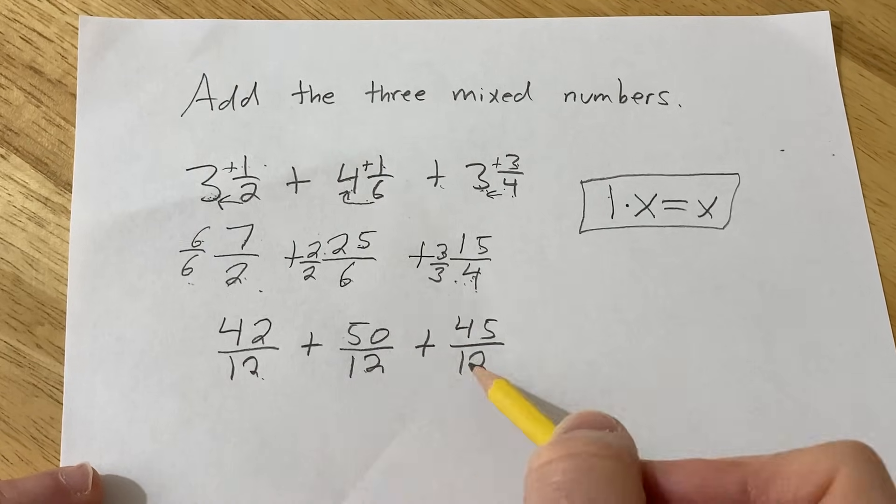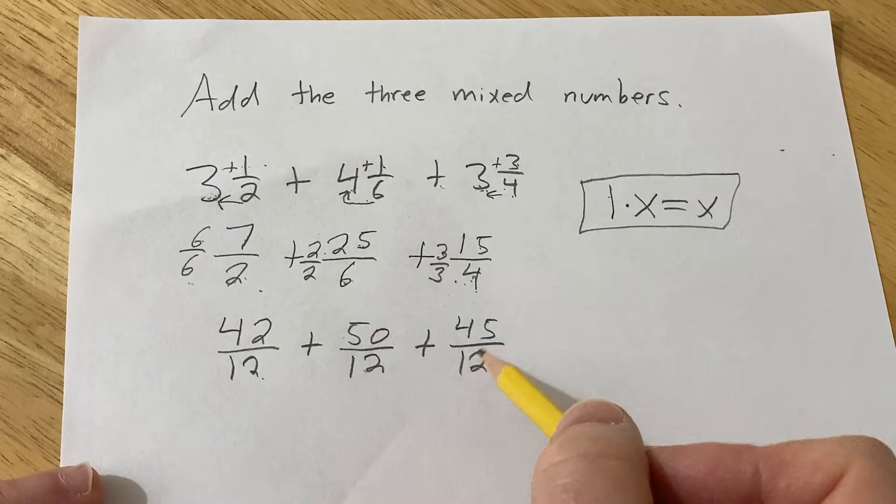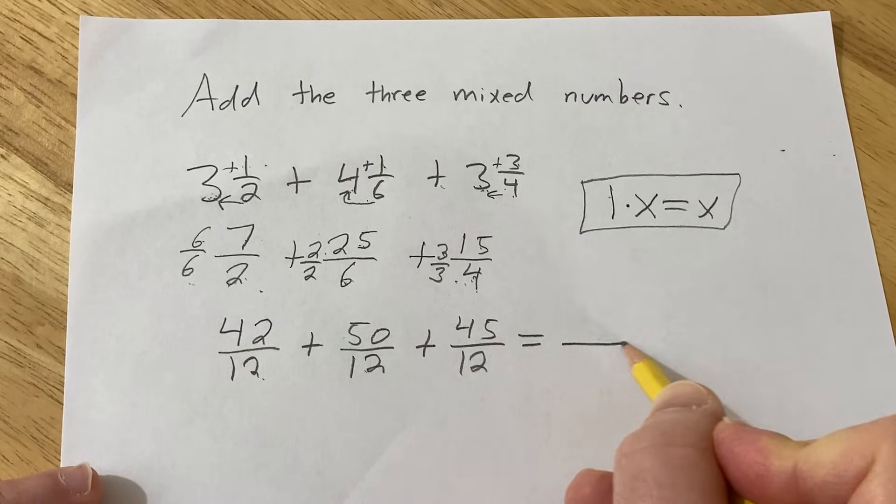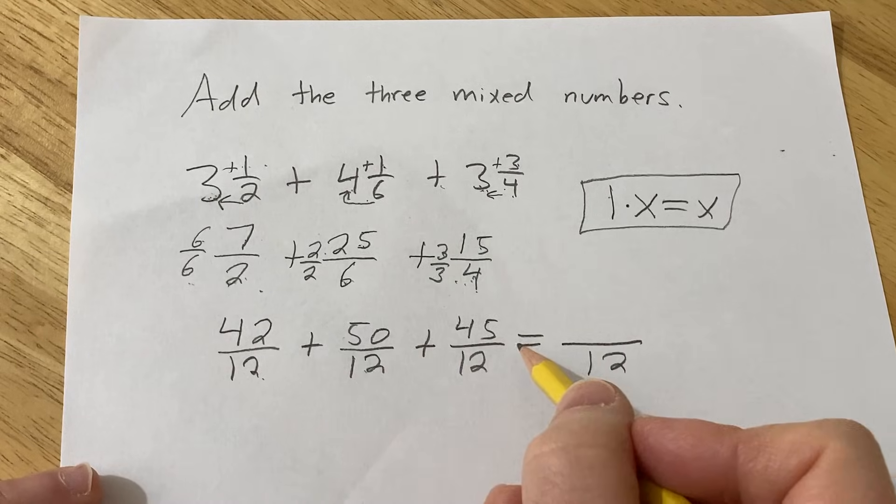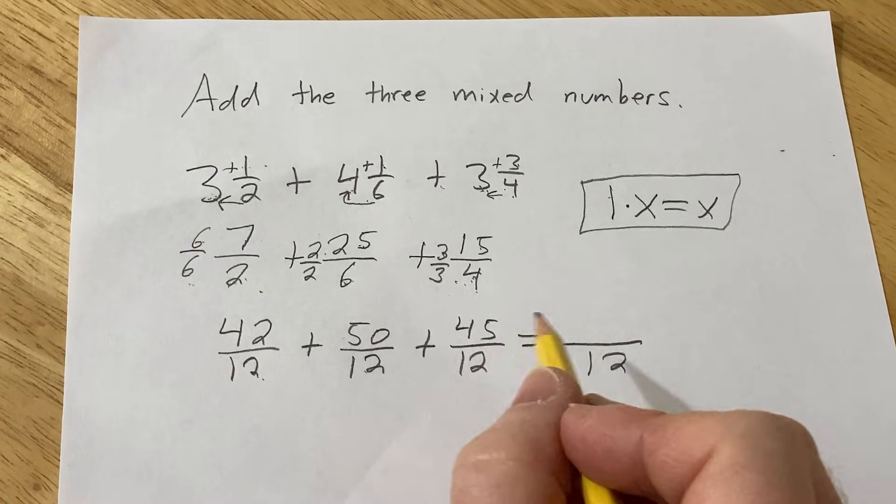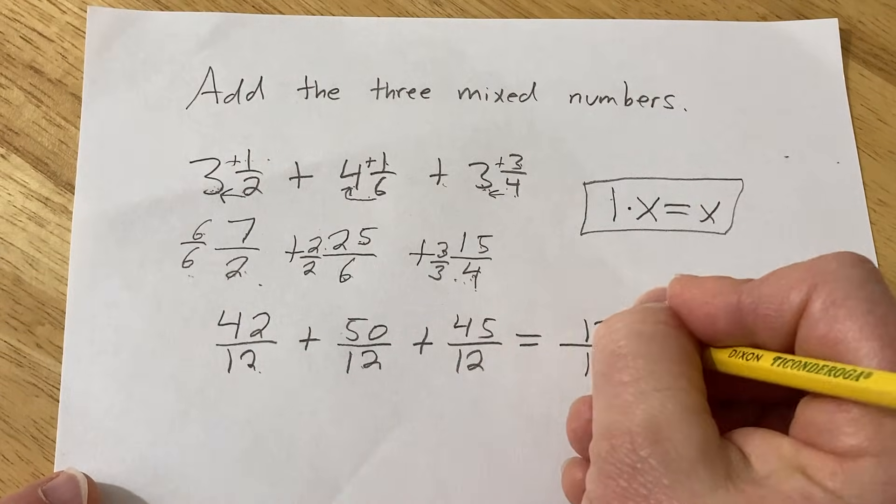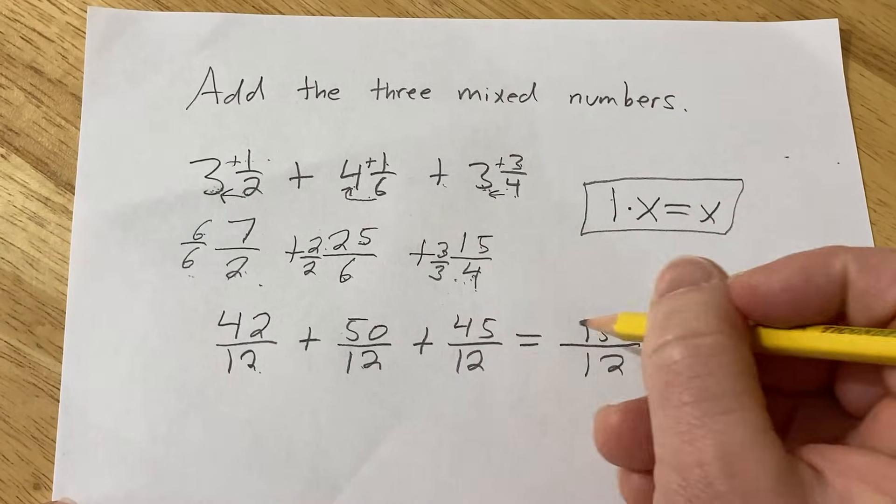So now the bottom, which is also called the denominator, they're all 12s. So now we can just add straight across. So on the bottom, we're still going to have a 12. And then we just have to add up all these numbers. So you can do this by hand, or you can use the calculator. I am going to use the calculator just because I don't want to mess up at the very end of this video. So you get 137 over 12.